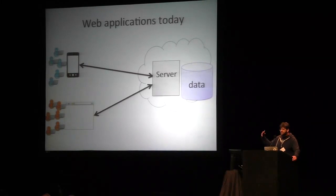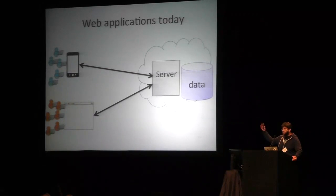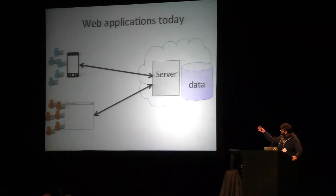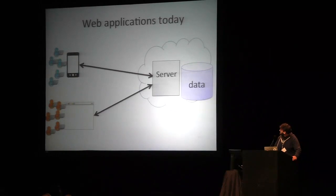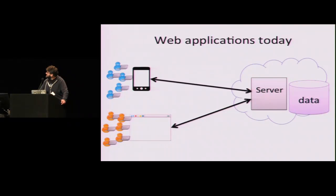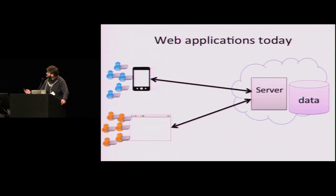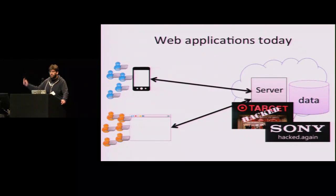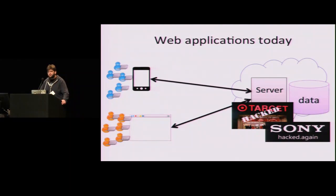Web applications have roughly two parts. There's a client that runs on a user's browser on a mobile phone, and the data generated by this client is stored on some back-end server and not on the client. This model works great and it's ubiquitous, until there's a data breach — and these happen all the time — and all of the confidentiality of the user's data is compromised.